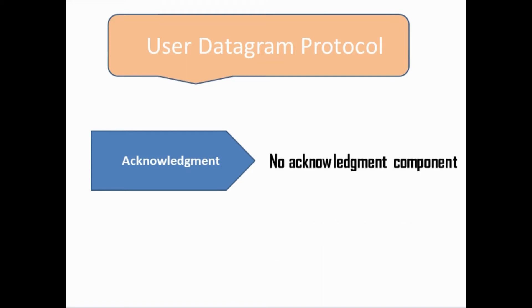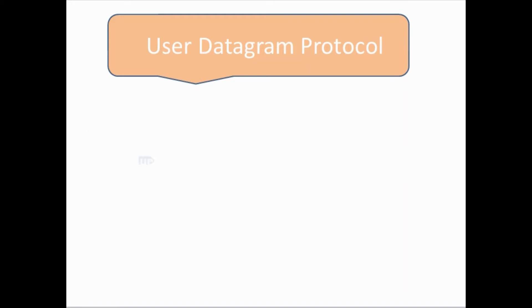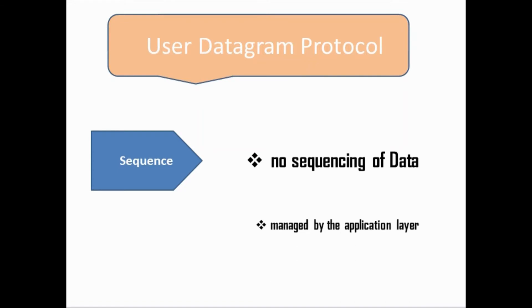After acknowledgement, we have sequence. Sequence is also an important thing. Whenever in TCP a packet is sent from source to destination, TCP maintains a sequence number, which is not in UDP. UDP does not maintain the sequence of the data. If it is required to maintain, then it will be managed by the application layer.